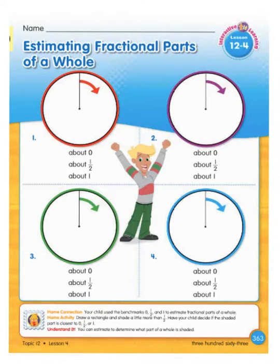What that means is you are going to be telling me estimates, which are guesses that make sense, kind of like a hypothesis in science, an educated guess about if it's closest to about zero of the circle is shaded in, closest to half or about half is shaded in, or almost the whole thing, about one, because when a whole shape is colored in, that's called a one whole.